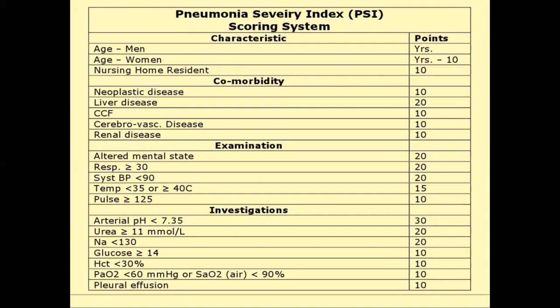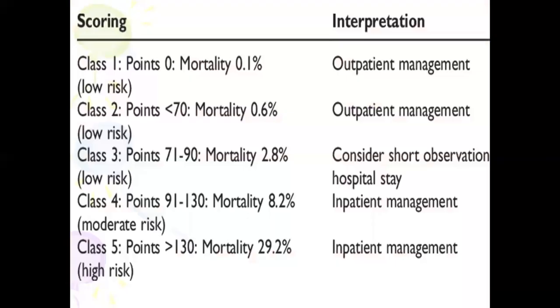The Pneumonia Severity Index consists of various factors including patient characteristics such as sex and age, comorbidities like cardiac failure, liver disease, or neoplastic disease, examination findings such as respiratory rate, blood pressure, and temperature, and investigation findings like arterial pH, urea, sodium, and glucose. The total score is classified into classes 1 to 5 — class 1 with 0 points allows outpatient management with 0.1% mortality, while class 5 with more than 130 points requires inpatient management with 29.2% mortality and is considered high-risk.